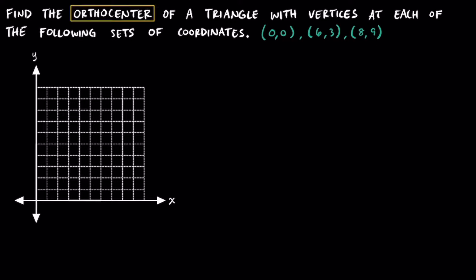We're going to find the orthocenter of a triangle with vertices at the following coordinates: (0, 0), (6, 3), and (8, 9). To help keep things clear and consistent, I'm going to label each of these points A, B, and C. Then on the coordinate plane, I'm going to plot these three points and connect them to make a triangle.